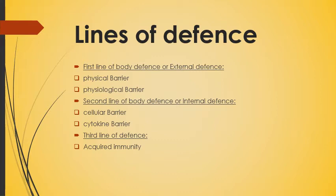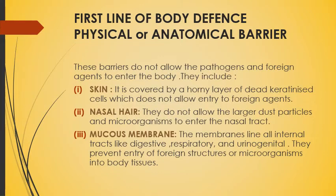The first line of body defense is the physical or anatomical barrier. This barrier does not allow pathogens and foreign agents to enter the body. How does it do this? Number one is skin. The skin is covered by a horny layer of dead keratinized cells which does not allow the entry of foreign agents. If any particular foreign particle is present on the skin, it will be trapped there and it won't enter your body. Number two is nasal hair — the hair present in our nose do not allow large dust particles, which may carry infectious agents or microorganisms, to pass through.